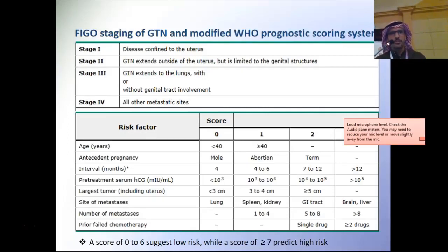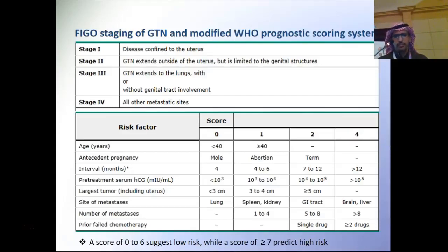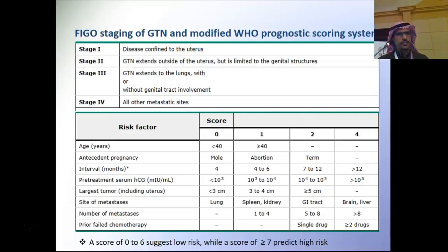The WHO prognostic scoring system depends on eight risk factors: age, antecedent pregnancy, interval (time between end of pregnancy and start of chemotherapy), pre-treatment serum beta-HCG, largest tumor size, site of metastasis, number of metastases, and prior failed chemotherapy. A score of 0-6 means low risk; 7 or higher means high risk. The WHO score is mainly used for Stages 2 and 3, as Stage 1 is usually low risk and Stage 4 is high risk. It is not used for placental site or epithelioid trophoblastic tumors.